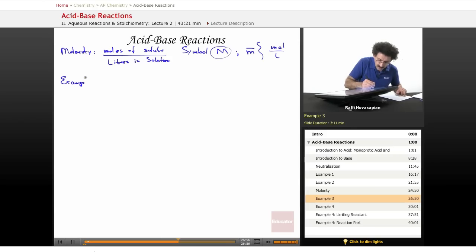Here, call it example three. I have 14.6 grams of potassium chloride and it is dissolved in 400 milliliters of water.